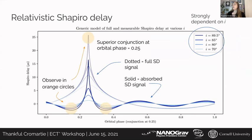We can only detect Shapiro delay in a small subset of systems, partially because of Shapiro delay's strong dependence on the inclination angle of the system. It has to be a very edge-on system to significantly measure Shapiro delay. You can see the difference between a 90-degree and 85-degree inclination is vast. So we really need a very edge-on system to see this effect.